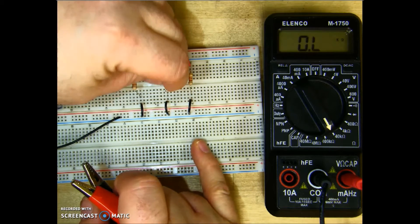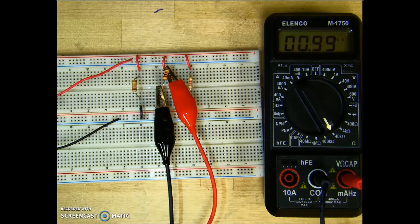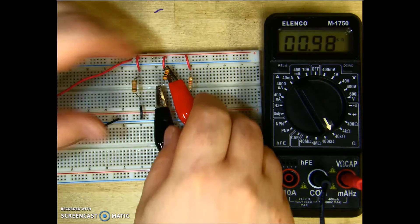I'll take R2, pull one of its terminals out, connect up my meter, and I get .99, which is good.